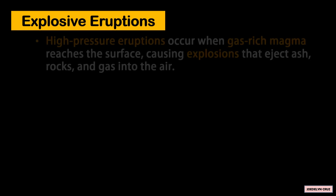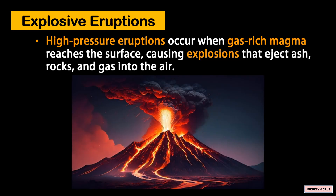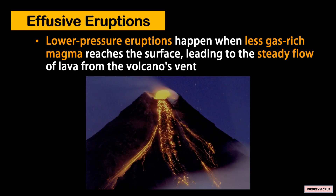Explosive eruptions are high-pressure eruptions that occur when gas-rich magma reaches the surface, causing explosions that eject ash, rocks, and gas into the air. Effusive eruptions are lower-pressure eruptions that happen when less-gas-rich magma reaches the surface, leading to the steady flow of lava from the volcano's vent.